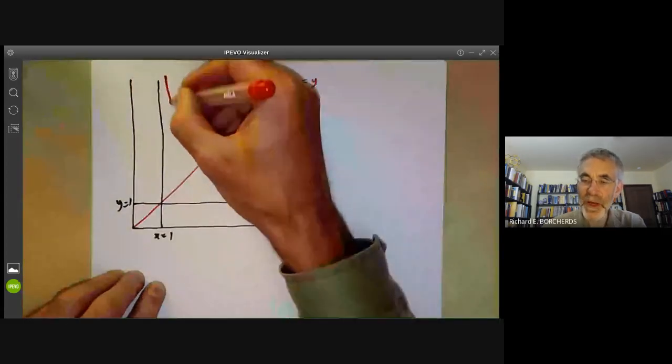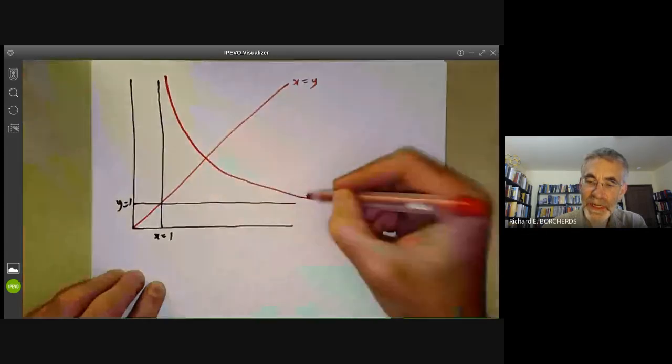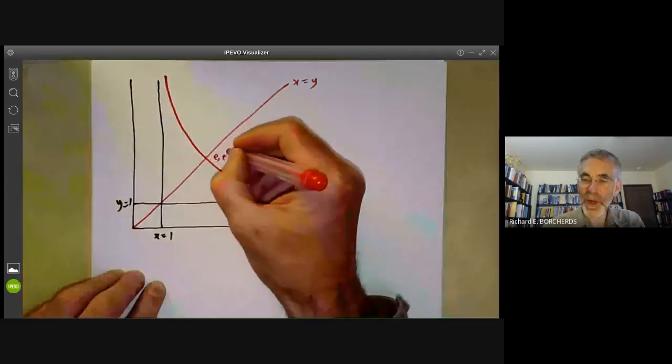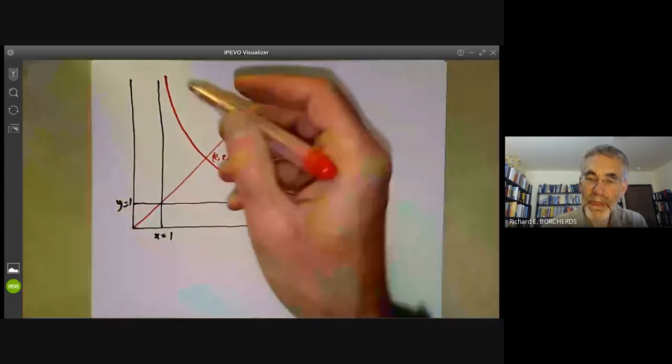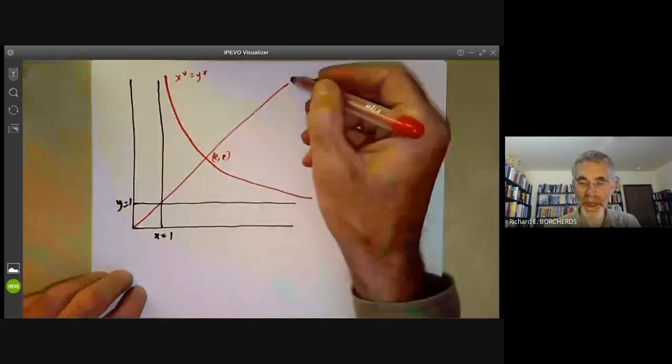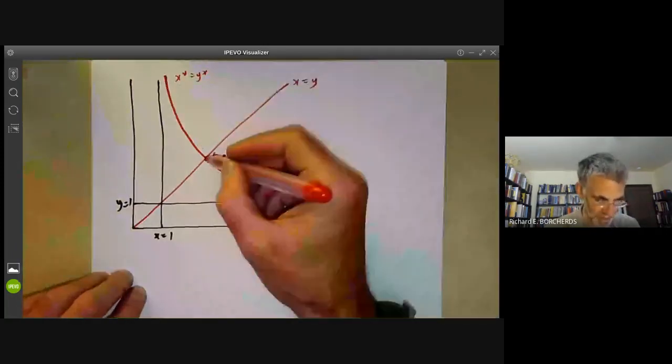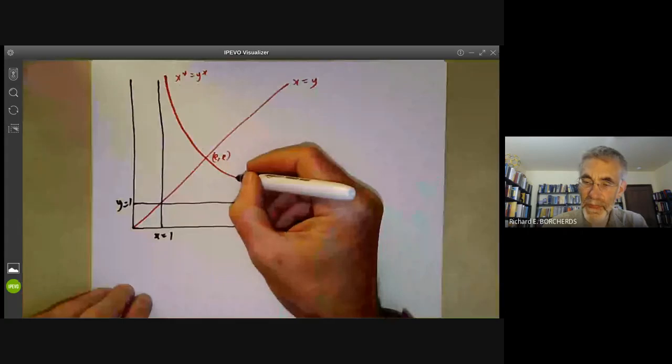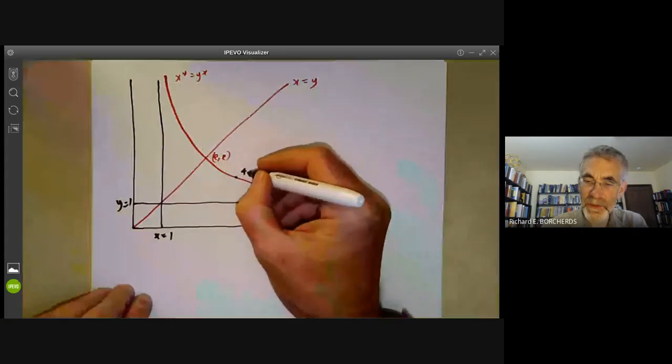And as we saw, they meet at the point e, e. So the points where x to the y equals y to the x consists of two components and they cross at this point here. So that gives one solution. And I guess we can mark in the special values for two and two, four.